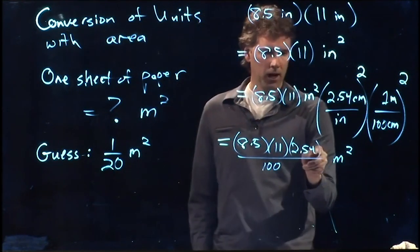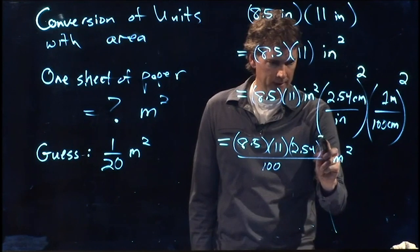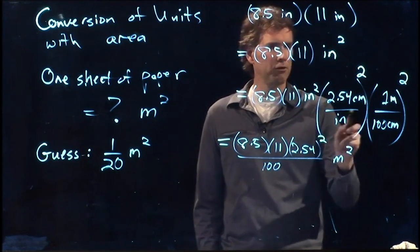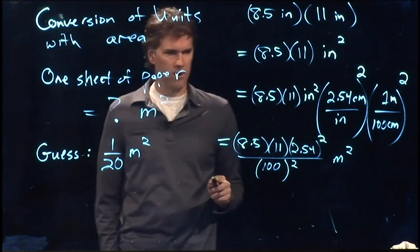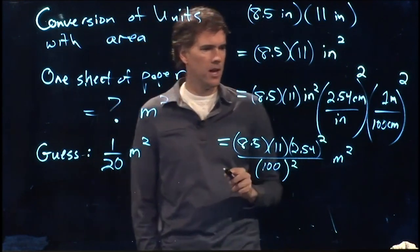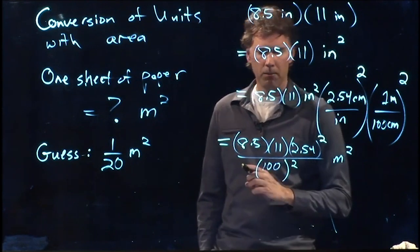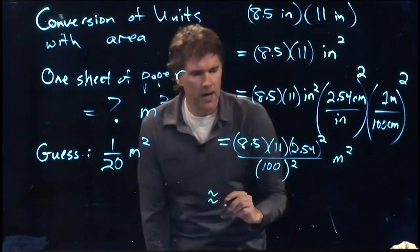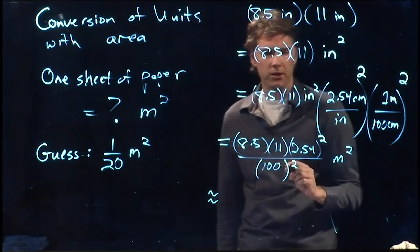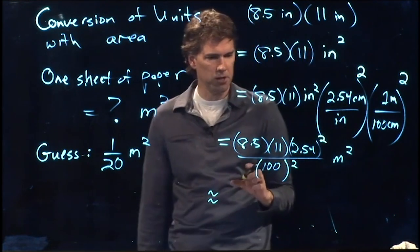And so the numbers here are not just multiplied directly. You have to square them. 2.54 is squared. 100 is squared. And now that should tell us how many square meters it is. I'll approximate it here if you guys want to punch it into your calculator. And let's see what you get.